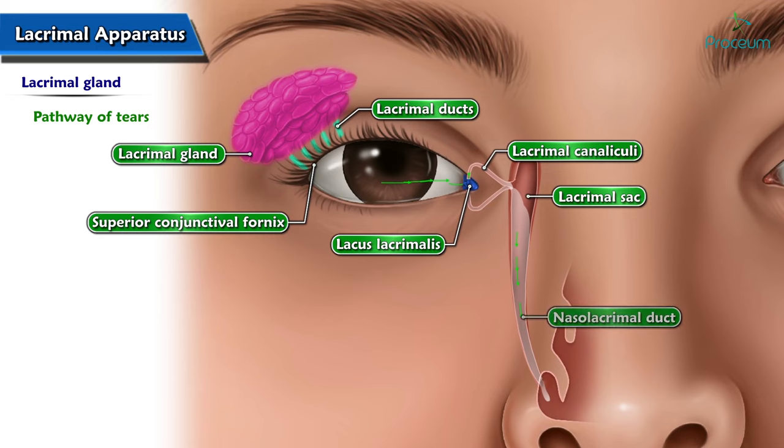From the lacrimal sac, tears pass to the nasolacrimal duct, which then drains them into the inferior nasal meatus.